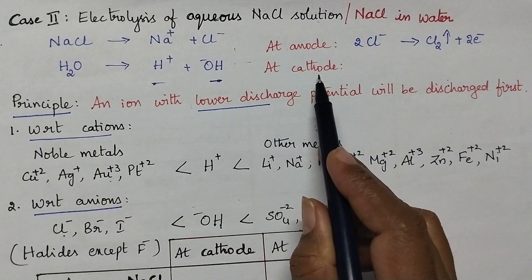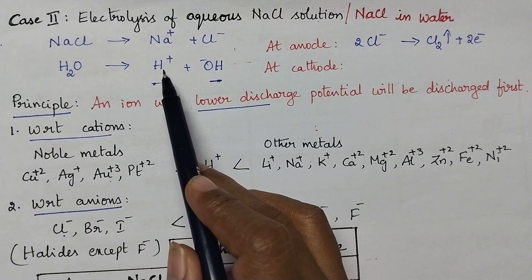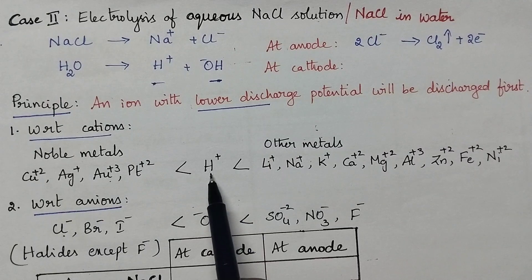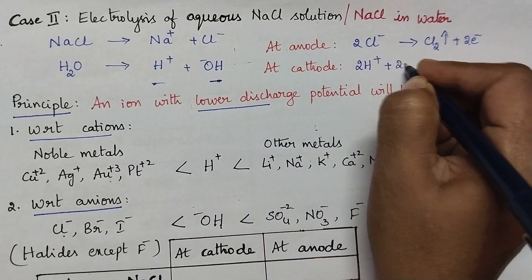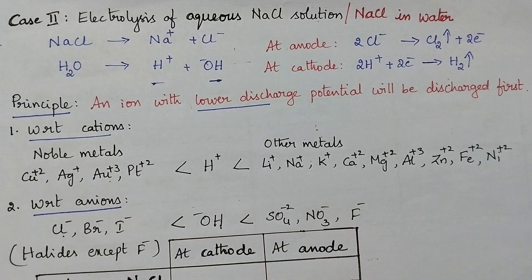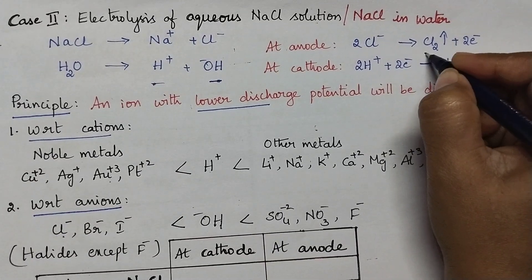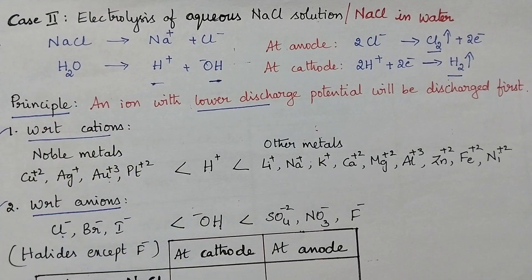Coming to the reaction at the cathode, two types of cations are present: sodium ions and H⁺ ions. From this principle it is clear that H⁺ ions are having lower discharge potential than sodium ions. So the H⁺ ions undergo reduction at the cathode and it results in the liberation of hydrogen gas at the cathode. So at cathode hydrogen gas will be liberated and at anode chlorine gas will be liberated. By following these two principles we can predict what type of products are formed at the cathode and at the anode during the electrolysis of any electrolytic solution.